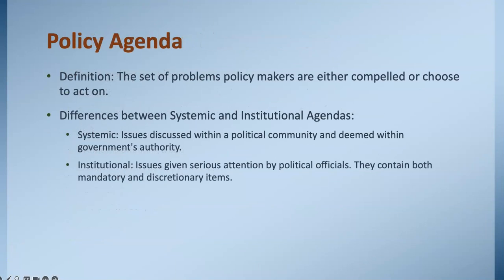Now let's talk about the policy agenda. Not every public problem is going to make it to the agenda. With finite resources, policymakers need to prioritize. A systematic agenda is like a universe of issues being discussed, but not all are ripe for action. In contrast, an institutional agenda contains issues that are more likely to see government action. The systematic agenda is broad, encompassing many issues discussed within a community, but not all see governmental action. The institutional agenda is more definitive — issues here are seriously considered by political officials and are more likely to result in concrete action.